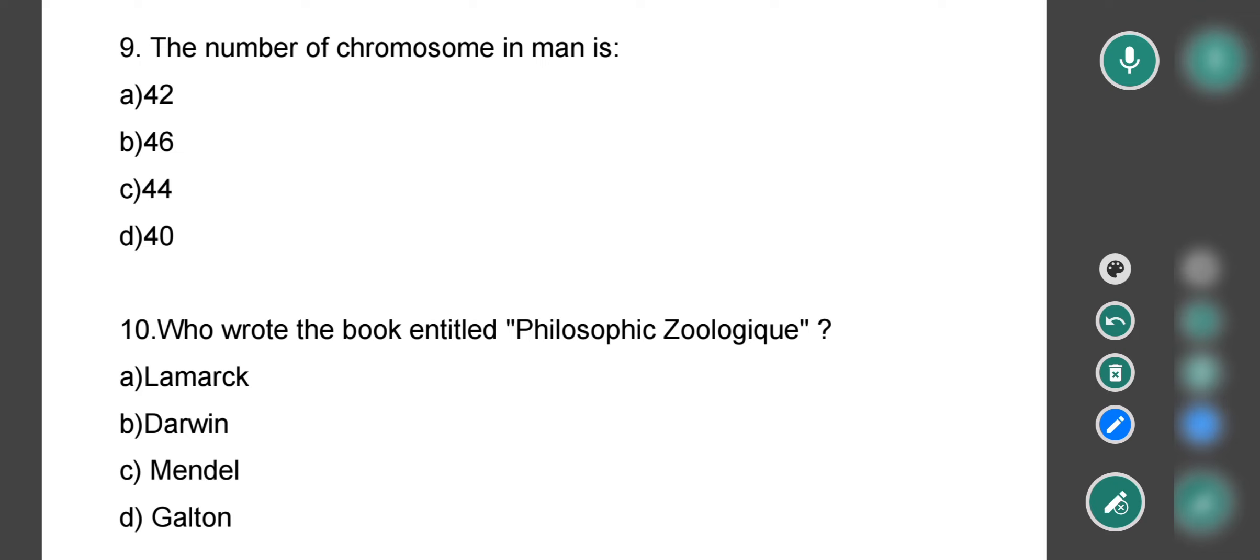Next question asks: Who wrote the book entitled Philosophic Zoologique? Who wrote the book Philosophic Zoologique? Options are Lamarck, Darwin, Mendel, and Galton. The correct option is Lamarck.